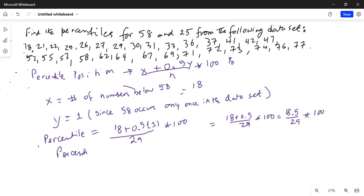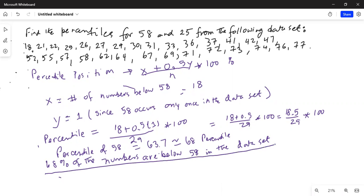Percentile of 58 is equal to 63.7, which we round it up to 68 percentile. What does it mean? It means 68 percent of the numbers are below 58 in the data set. That is the meaning of 68th percentile being the position of 58 in the data set.